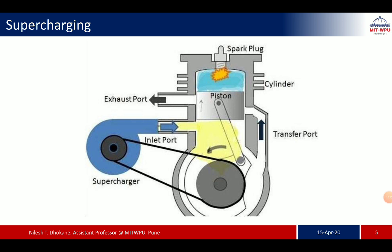In supercharging, a centrifugal compressor or other compressor types can be used; it spins at around 50,000 RPM. It is not as quiet as a turbocharger but is more reliable because it continuously receives power from the crankshaft, which is always rotating, keeping the compressor shaft constantly running. A supercharger can also deliver its boost at lower RPM due to this continuous operation. The compressed air from a supercharger is at a lower temperature compared to a turbocharger.